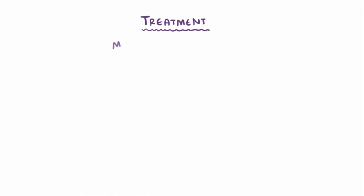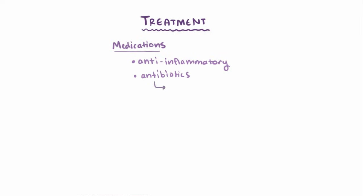Treatment for Crohn disease usually involves anti-inflammatory medications and antibiotics. Antibiotics are thought to help control symptoms by reducing bacteria levels in your intestine, sometimes called bacterial overgrowth, and also by curbing the immune response, since some antibiotics have anti-inflammatory effects as well.